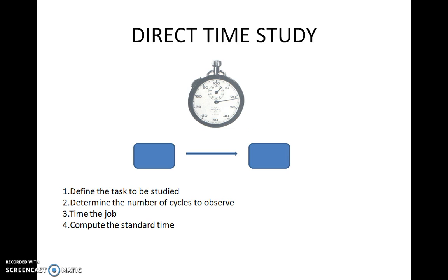In a direct time study using a stopwatch, we first select the job to be studied and determine the number of cycles to be studied. Then using the stopwatch, we measure the time taken for doing the job from the start of the job to the end of the job.